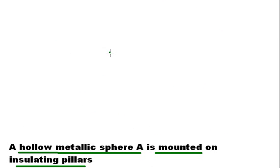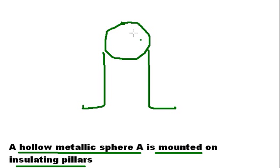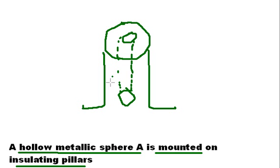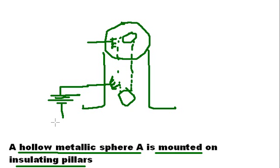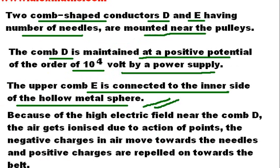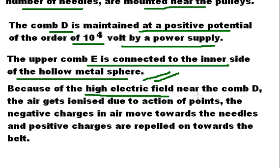To summarize the diagram: there is a metallic sphere mounted on an insulating pillar, two pulleys — one at the center and one at the bottom — connected by a belt, two sharp comb-like metallic conductors E and D, with D connected to the positive terminal of a battery whose negative terminal is grounded, and an electric motor which drives pulley C.